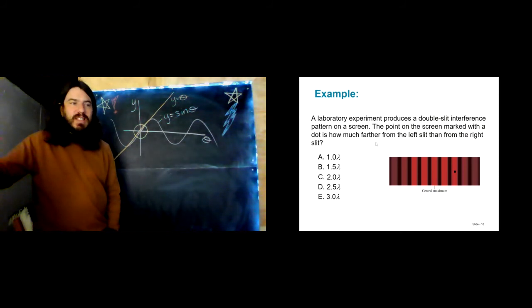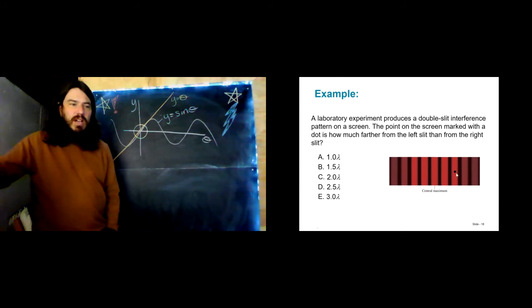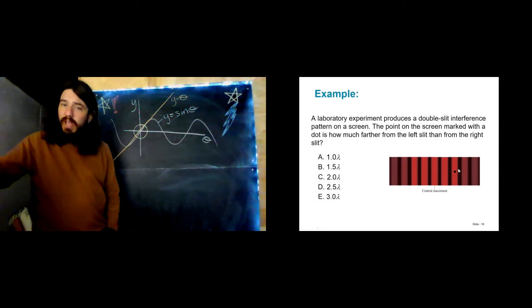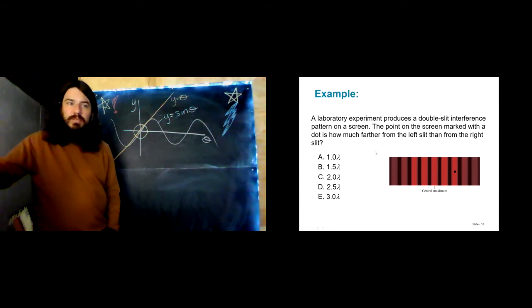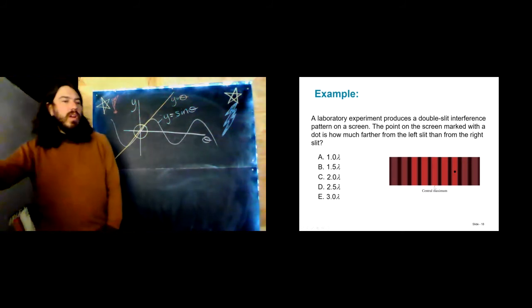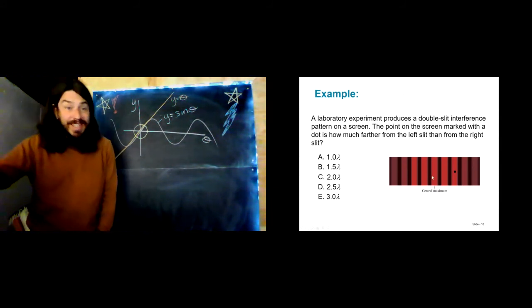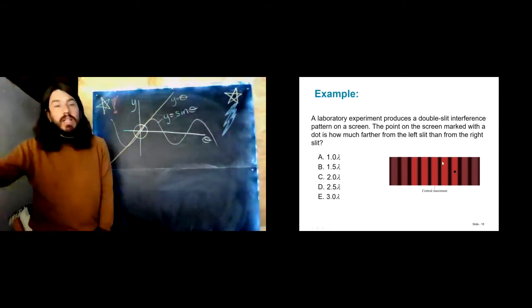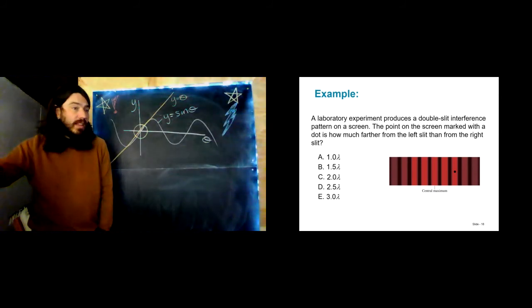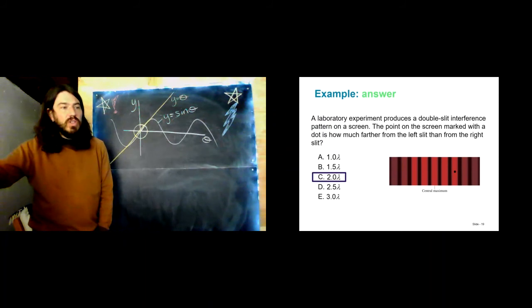Let's do a couple of examples. A laboratory experiment produces a double slit interference pattern on a screen. The point on the screen marked with a dot — how much further is it from the left slit than from the right slit? We're looking for the path length difference. The central maximum has a path length difference of zero, M equals 1 has a path length difference of one wavelength, and this looks like the M equals 2 bright fringe, so this must be a path length difference of two wavelengths.